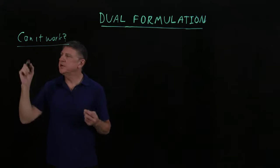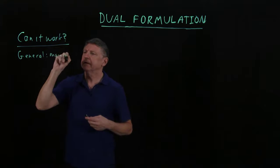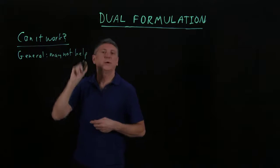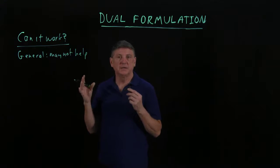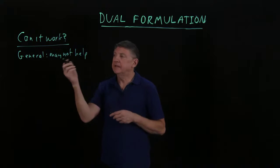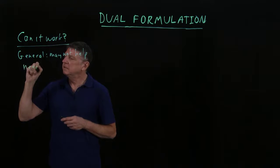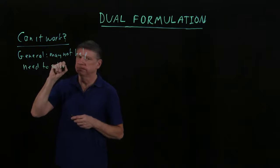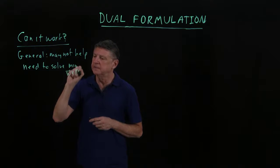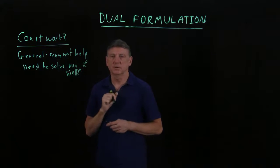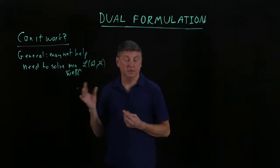In the general case, it may not help. When we take the dual, we're minimizing the Lagrange function over the vector argument. It's far from clear that this will generally help because we need to solve the min over all vectors in the vector space of the Lagrange function, and that may be difficult.